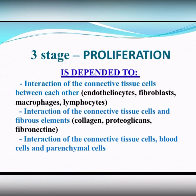Proliferation is dependent on the interaction of the connective tissue cells between each other, of connective tissue cells and fibrous elements, and of connective tissue cells, blood cells, and parenchymal cells.